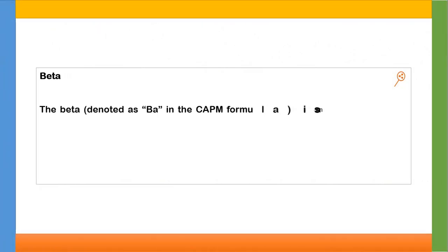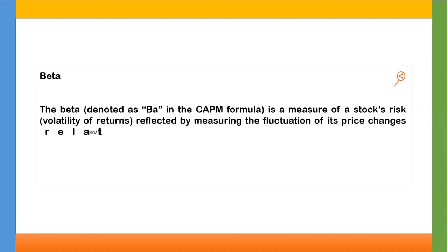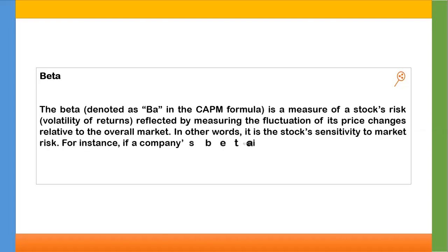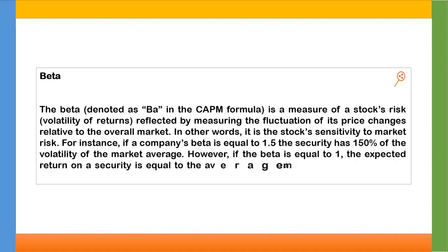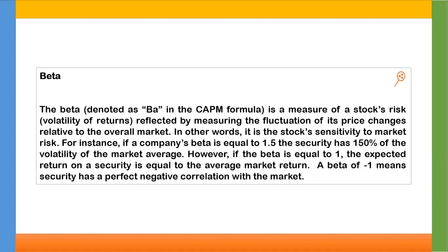Now let's know what is beta. Beta is a measure of the stock's risk, reflected by measuring the fluctuation of its price changes relative to the overall market. In other words, it is the stock's sensitivity to market risk. For instance, if a company's beta is equal to 1.5, the security has 150% of the volatility of the market average. If the beta is equal to 1, the expected return on the security equals the average market return. A beta of minus 1 means the security has a perfect negative correlation with the market.